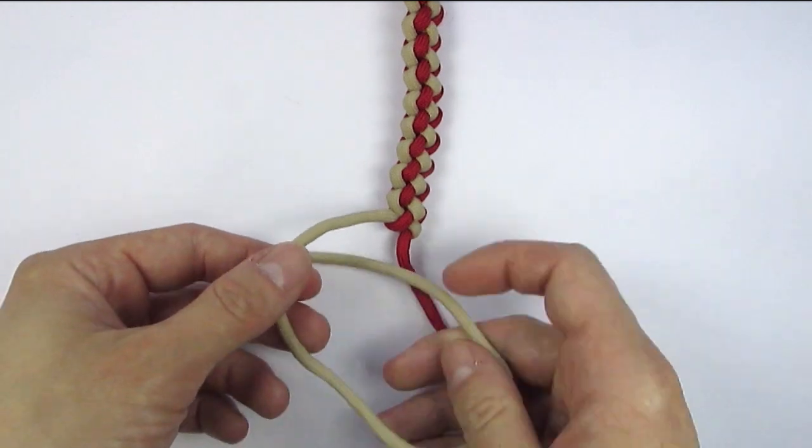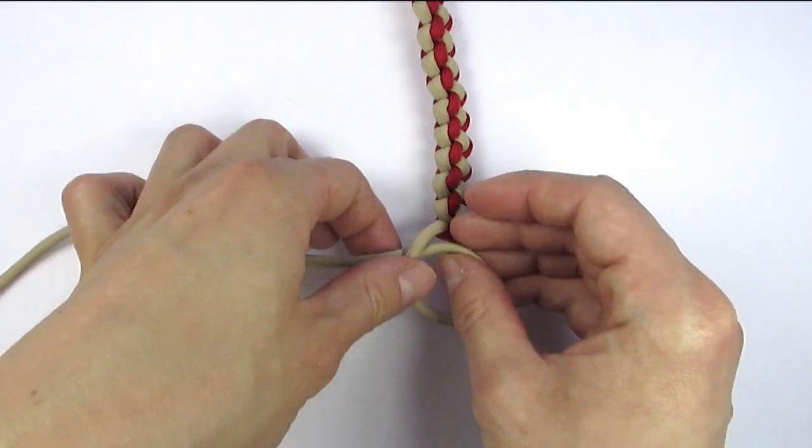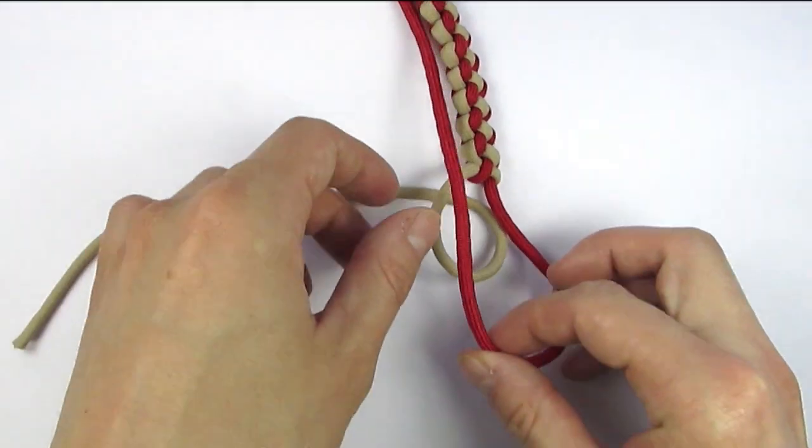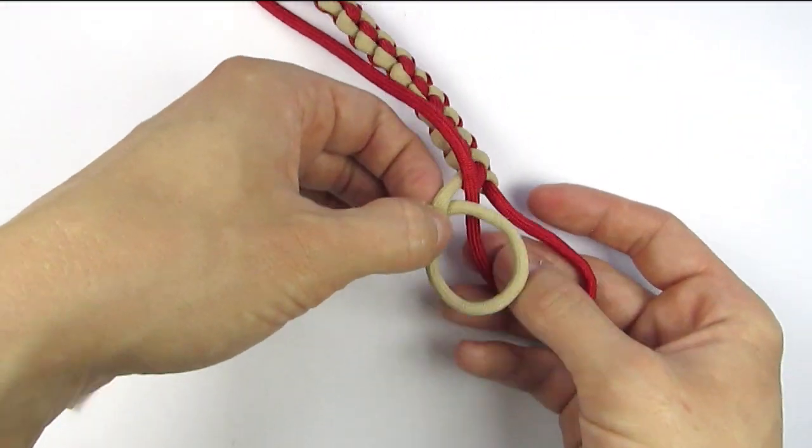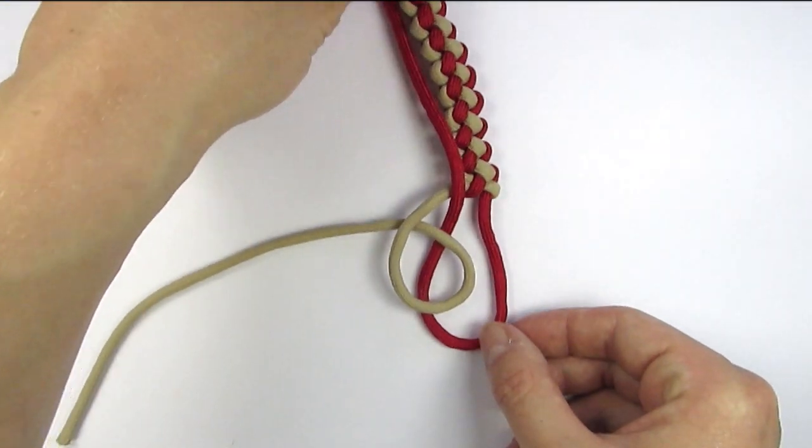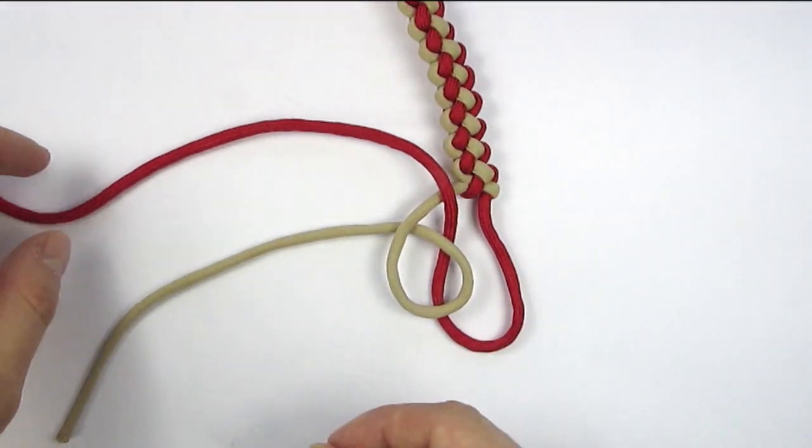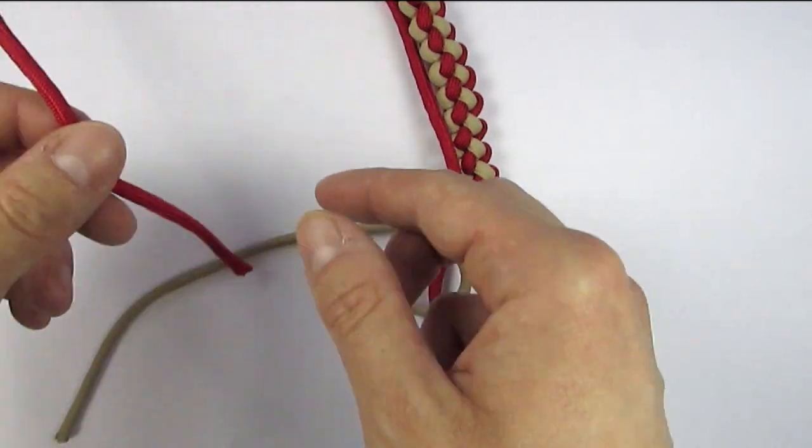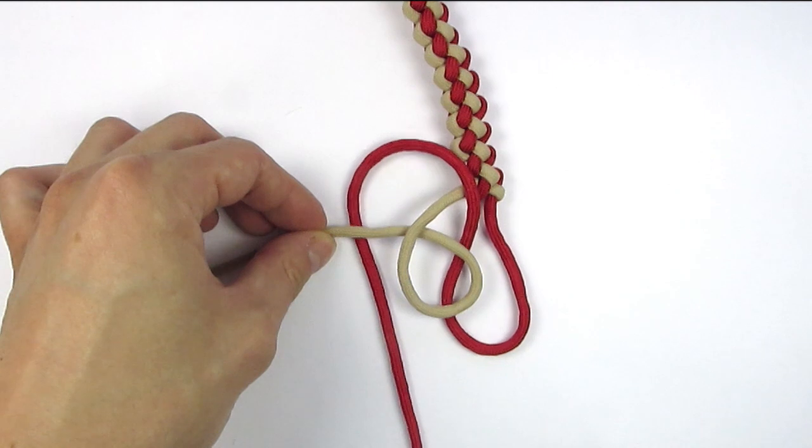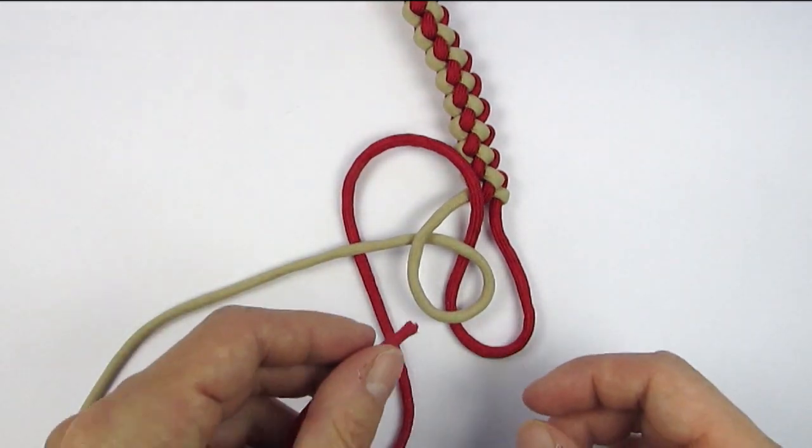Now we can make a lanyard knot at the end to serve as the ball for our bracelet. I'm just demonstrating it here very fast, but I have made a tutorial on the lanyard knot and I'm going to leave a link in the description you can use to learn the knot. Any stopper knot can work as long as it is large enough to fit the loop at the bottom of the bracelet.